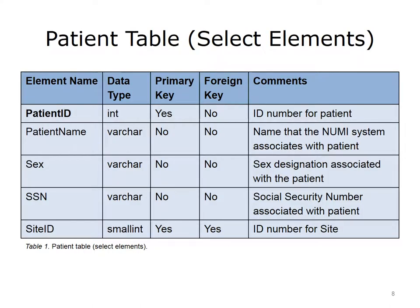This discussion will begin with the center of the healthcare system, the patient. Note that for this table, and for all the tables that follow, the examples are from the U.S. Department of Veterans Affairs, or VA, Systems Management Guide for National Utilization Management Integration, or NUMI, written by the architects for system developers and maintainers. To simplify these examples, only a few tables from the NUMI application, and only a select number of elements or fields from each table will be presented, which should provide a feel for the database design and relationships without getting lost in too many details.